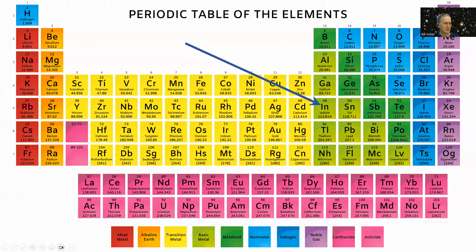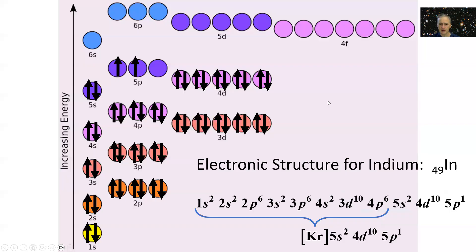Let's look at a second element in row 5, indium, symbol In, with 49 electrons. So indium is going to look like this...